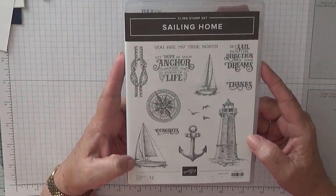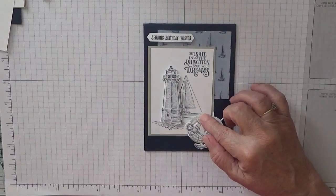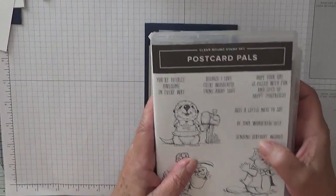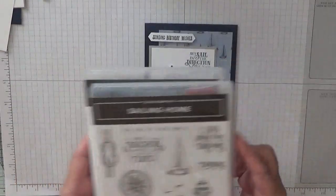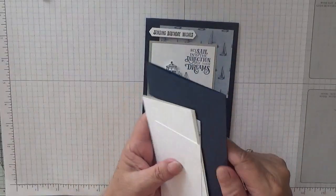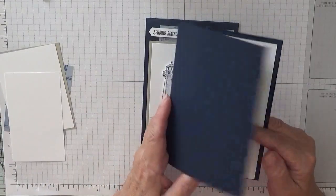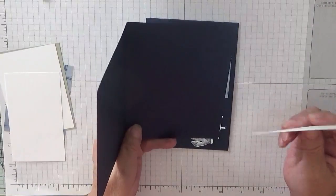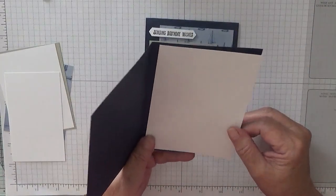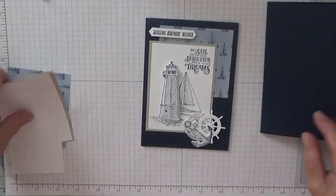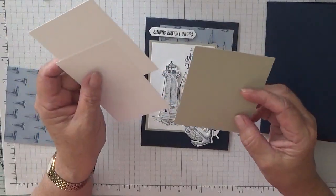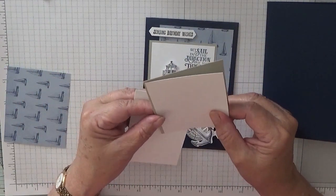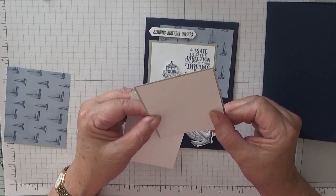So to make this card, the sentiment Sending Birthday Wishes I got from Postcard Pals. I've got a card base of eight and a quarter by five and seven eighths, scored at four and one eighth and folded in half. I've also got a piece of white at five and five eighths by three and seven eighths for the inside. I've got a piece of Sahara Sand at three inches by four inches and a piece of white at three and seven eighths by two and seven eighths.